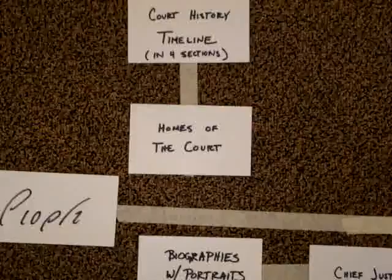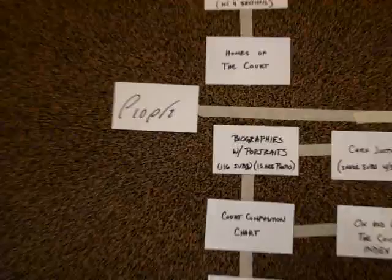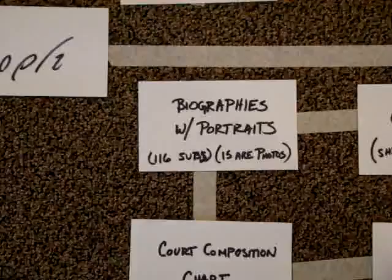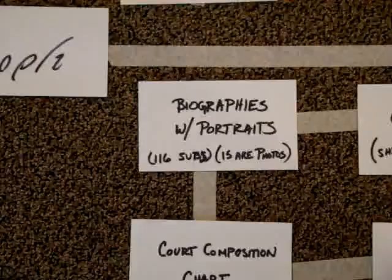That label could use a rename. The final section of the archive is the people that have made up the court. We're going to have the first part be the biographies, and we've decided to merge the biography and the portraits together, so it's not two separate pages but one page that has both the history of the judge and the actual portrait information available as well.